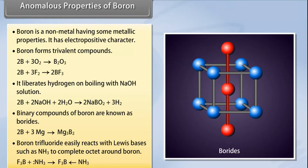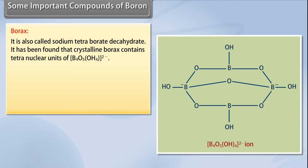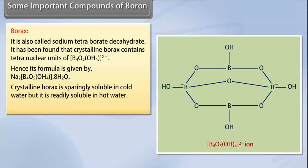Important compounds of boron — Borax: Borax is also called sodium tetraborate decahydrate. Crystalline borax contains tetranuclear units of [B₄O₅(OH)₄]²⁻, so its formula is Na₂[B₄O₅(OH)₄]·8H₂O. Crystalline borax is sparingly soluble in cold water but readily soluble in hot water.